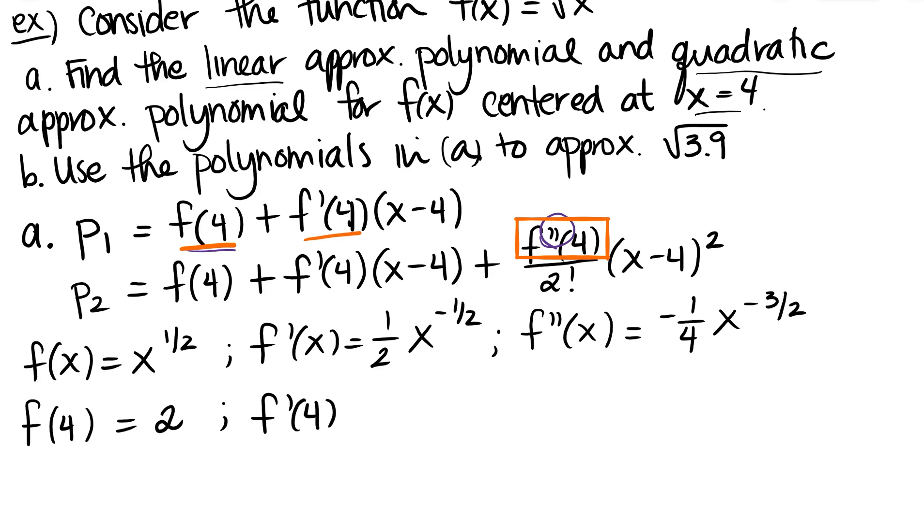Square root of 4 is 2 obviously. f primed of 4, well that's going to be 1 over 2 times 1 over the square root of 4, which is 1 fourth. And then f double primed of 4, I have a negative 1 fourth times - now remember how to do this.